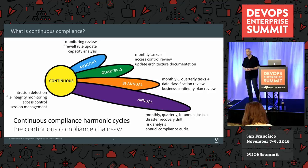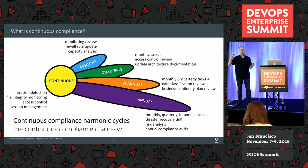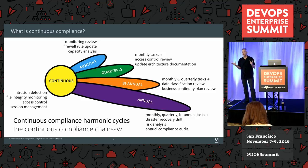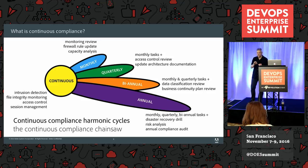There are things that happen on timers — like access reviews where you review all people who have access to all systems, potentially making sure someone else authorized that access. But the reason I call it continuous compliance is that there are continuous processes that take two forms. One is something actively running all the time, like intrusion detection or file integrity monitoring. And then there's some that only execute when there's a request — access control is a great example. It has to happen the same way every time and be available at all times, because if somebody leaves, you need to kill their account right away.